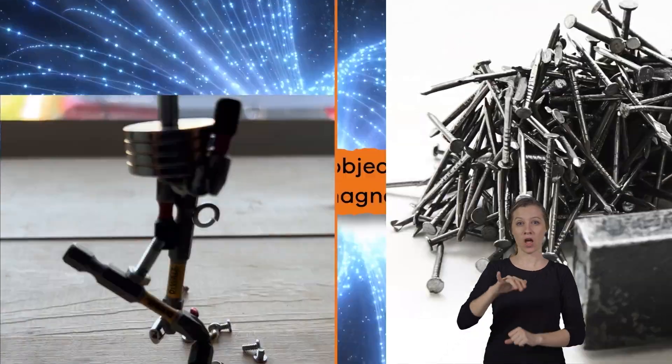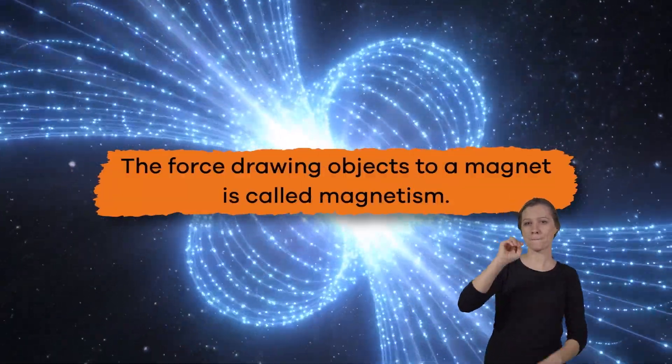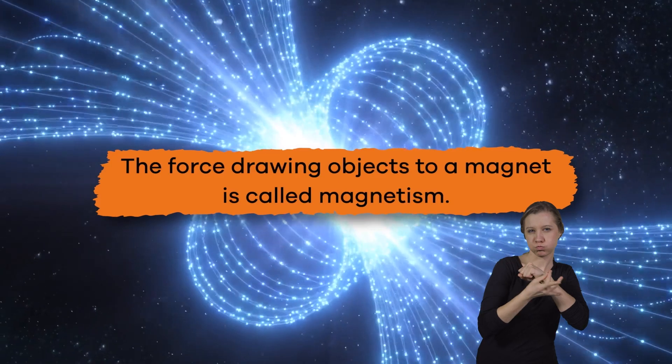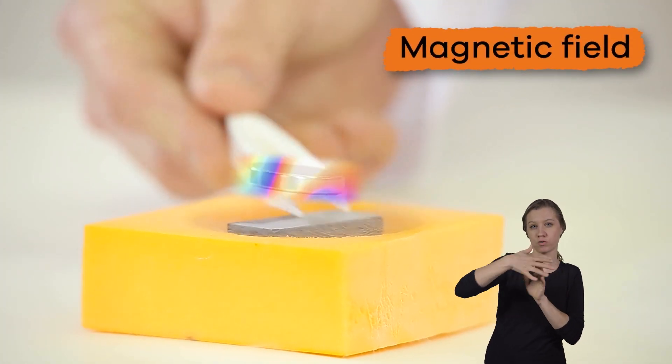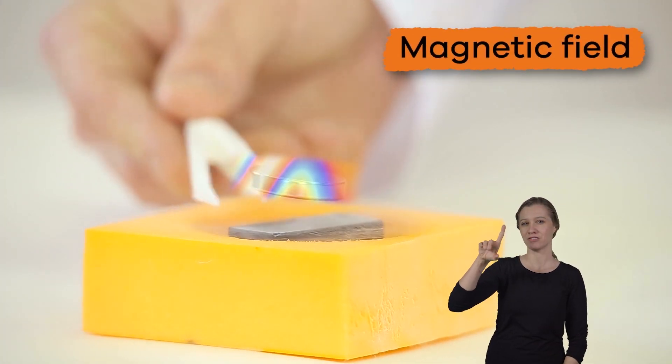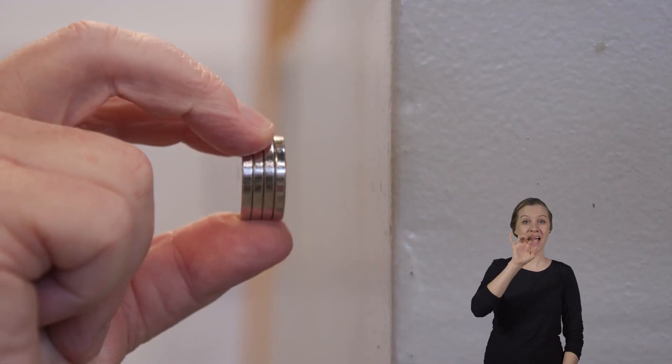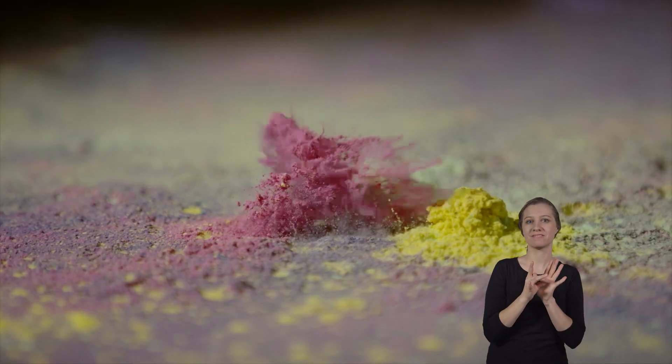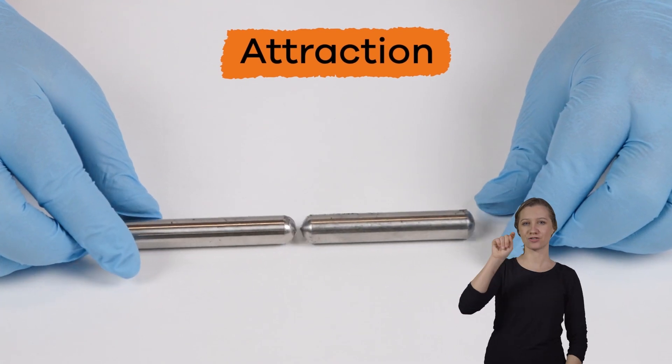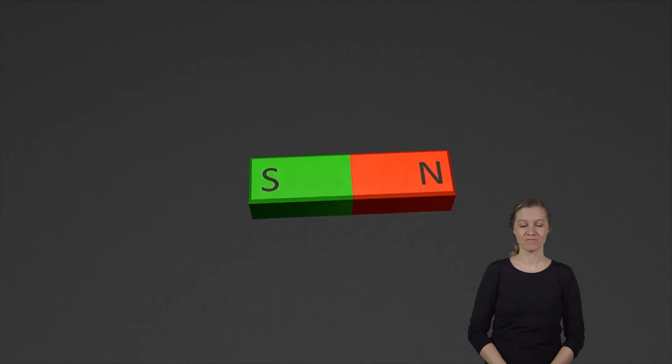The force drawing objects to a magnet is called magnetism, and the area surrounding a magnet is called a magnetic field. Pieces of metal like iron or steel can be pulled to a magnet. This is called attraction.